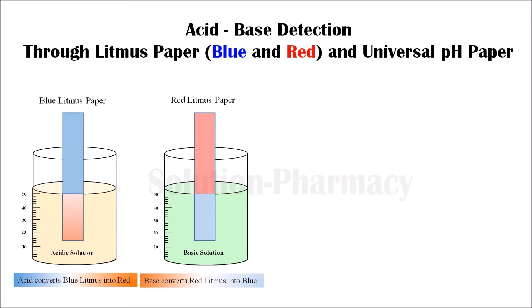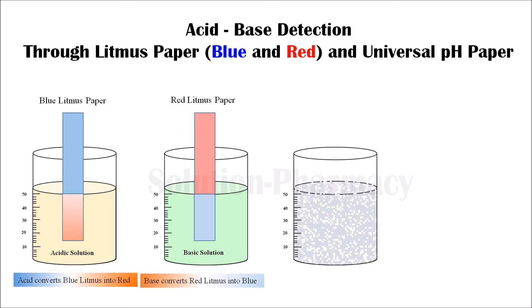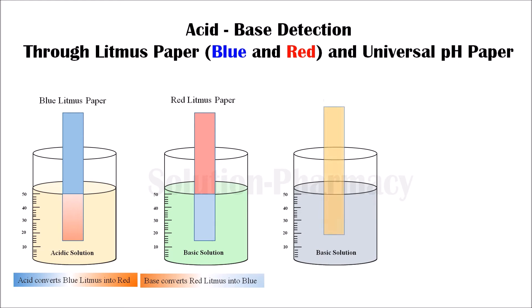So let's see how it works. Take a beaker with a solution that is basic in nature — we know it is basic because it converts red litmus to blue. Now dip the universal pH paper into this solution, then observe the change in the color of the universal pH paper.